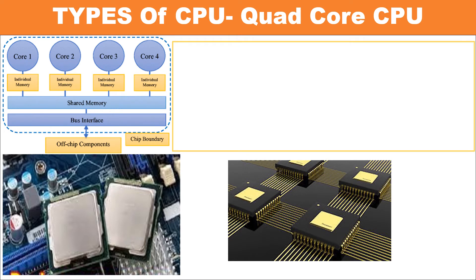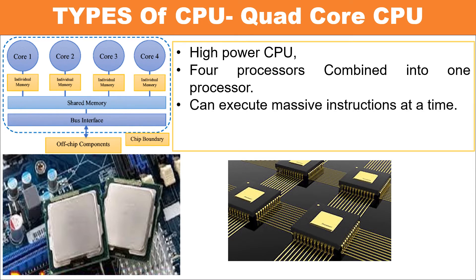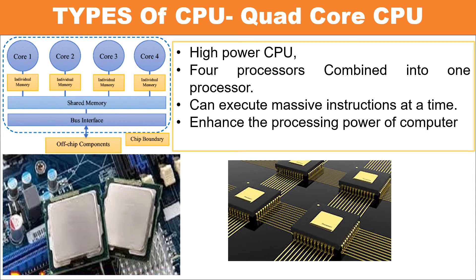The quad core CPU is a high power CPU in which four different processor cores are combined into one processor. Every processor is capable of executing and processing all the instructions independently without taking support from other processor cores. Quad core processors can execute massive instructions at a time without any waiting.